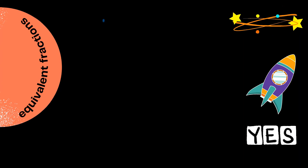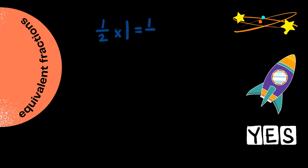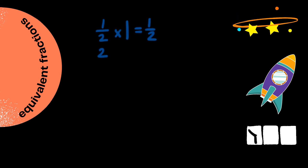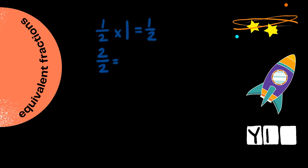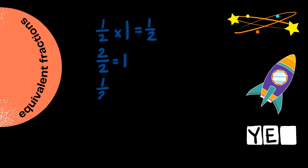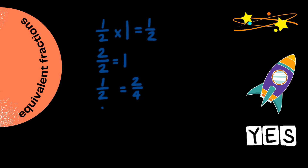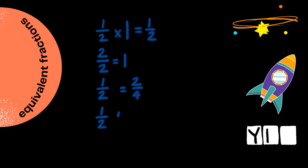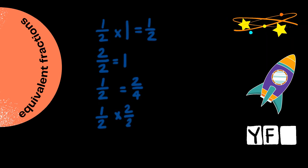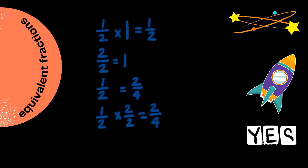Why is it important to know that when I multiply a fraction — for example, one over two times one — it equals a half, or that its value stays the same? Or that when I divide any number by itself — for example two over two — that it equals one? Right at the beginning of this video we said that a half is equal to two over four. To get a number from a half to two over four, we multiply both the numerator and the denominator by two over two. Two over two is equal to one.